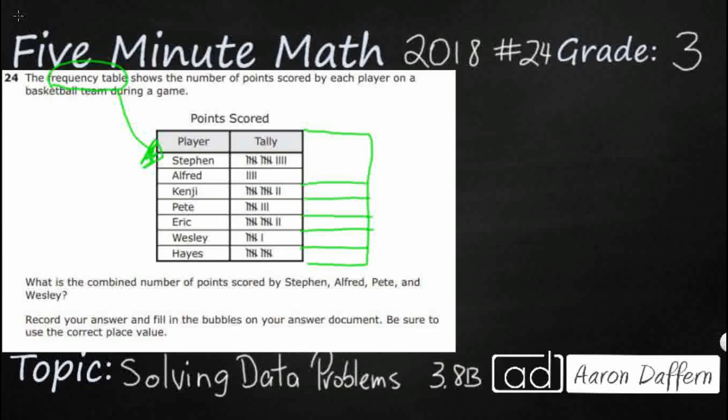We could just read off the tally marks, but let's go ahead and I am just going to put a little number sign here, you might think of it as a hashtag. I just want to put the pure number right there. And then we need to have the combined number of points of Stephen, Alfred, Pete, and Wesley.